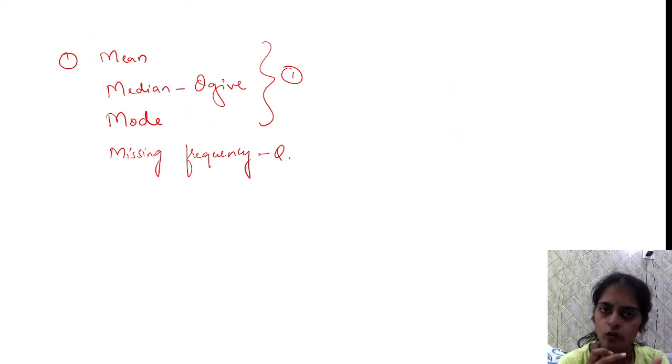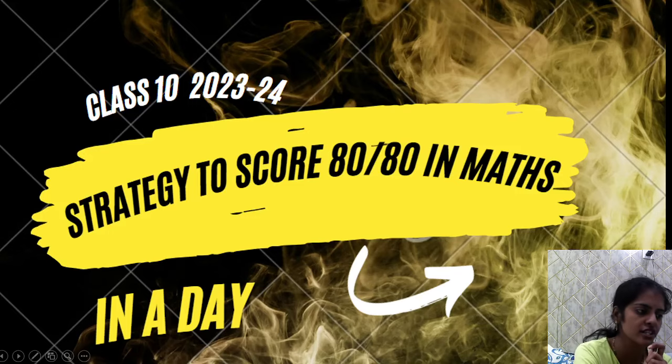How to find mean, how to find median, how to find mode. You need to know the formula because with the formula, you can score 4 marks. What is the formula for mean, what is the formula for median, what is the formula for mode? Only 4 mark question.